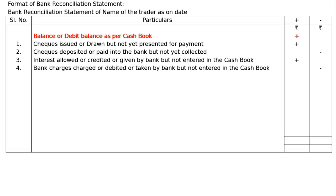Fourth item: bank charges debited or taken by the bank but not entered in the cash book. It was taken from the account holder's account by the bank. Hence we have to deduct this amount from the cash book balance to find out the correct passbook balance.